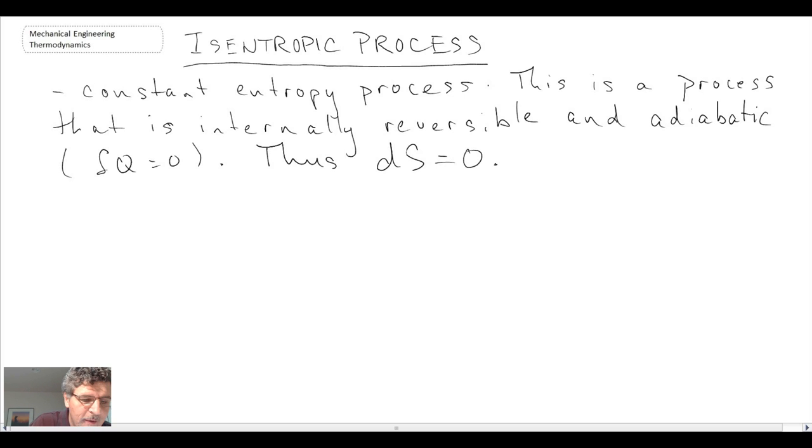For an isentropic process, what we are looking at is a system that is internally reversible and it is adiabatic, so that means there is no heat transfer. It is an idealization, however it is one that we will use throughout the course as the best case scenario for different types of processes.